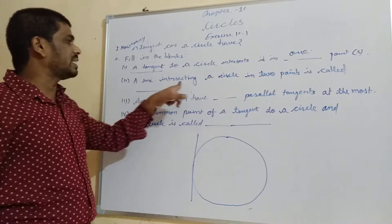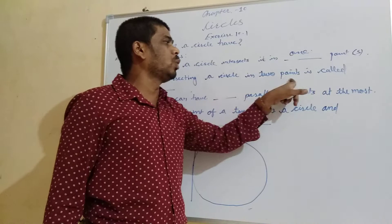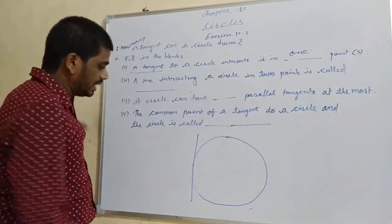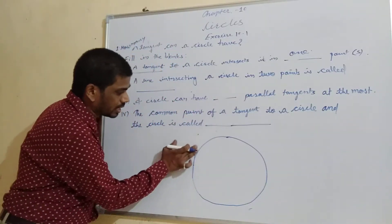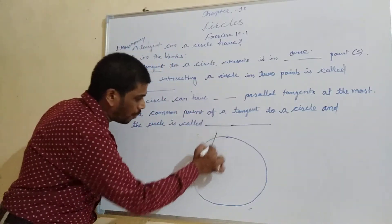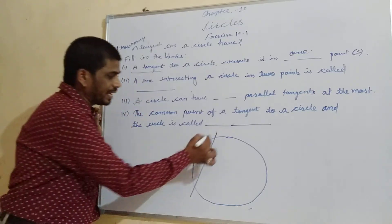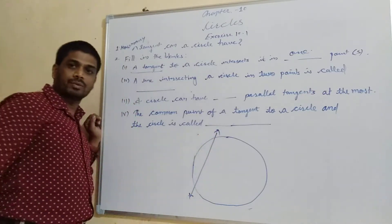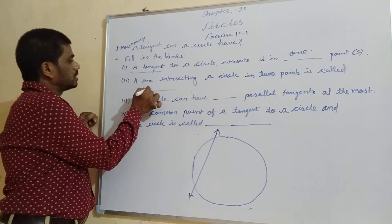A line intersecting a circle at two points is called a secant. So the answer will be secant.